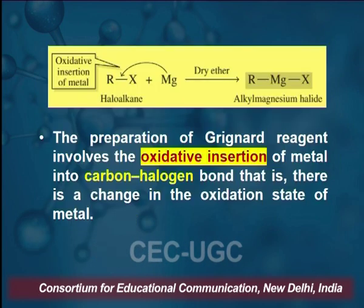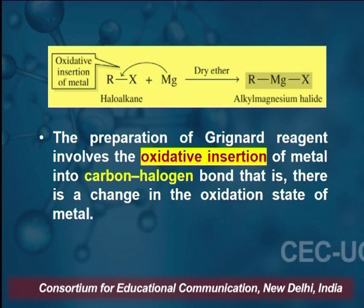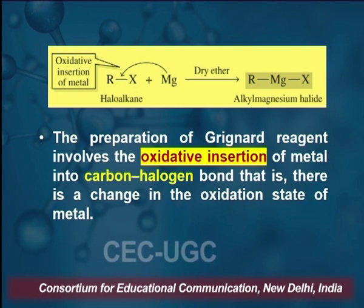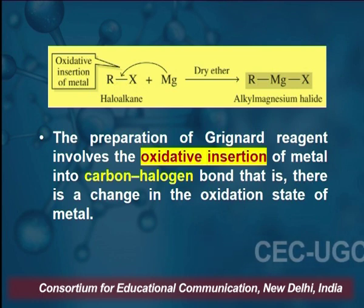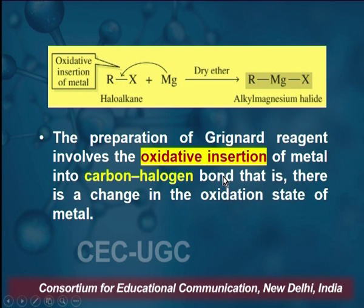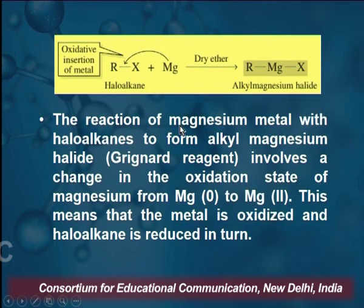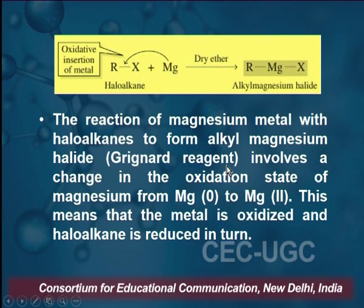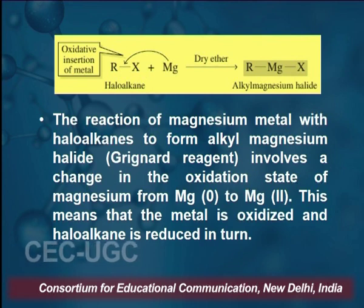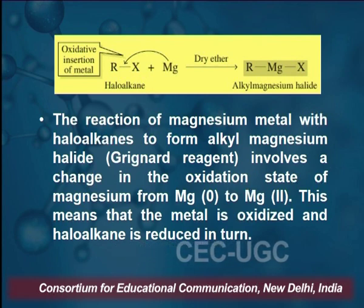In Grignard Reagent, magnesium is basically inserted between the alkyl group and the halogen. This is an oxidative insertion of metal, which results in the formation of Grignard Reagent. The preparation involves oxidative insertion between the metal, carbon, and halogen bond, and there is a change of oxidation state of metal from magnesium 0 to magnesium 2+. This means the metal is oxidized and the haloalkane is reduced.